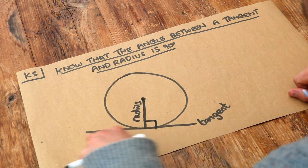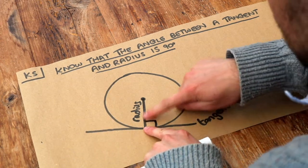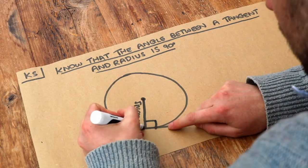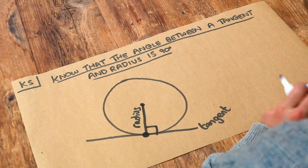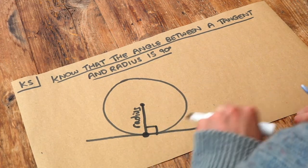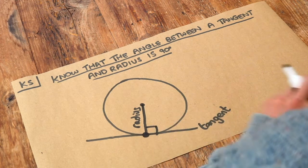So in general, whenever you have a tangent to a circle and it meets the radius of the circle at a particular point, this point here, then you have a right angle at that point. So always look out when you see a radius and a tangent together that meet at a point.